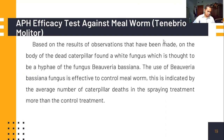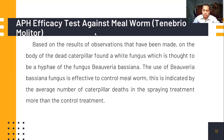For the efficacy test of entomopathogenic fungus Beauveria bassiana against mealworm Tenebrio molitor, based on observations made on the bodies of dead caterpillars, a white fungus was found, thought to be hyphae of the fungus Beauveria bassiana. The use of Beauveria bassiana fungus is effective in controlling mealworm, as indicated by the average number of caterpillar deaths in the spraying treatment being higher than in the control treatment.